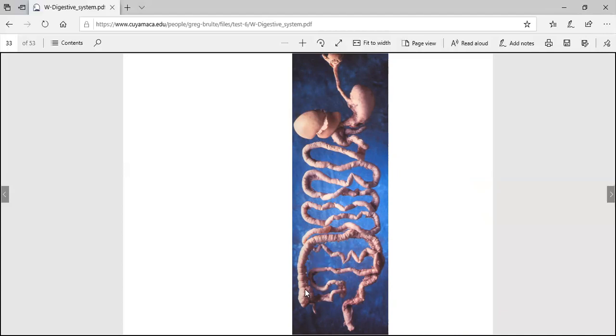Nice cecum, see how it's way bigger around than the rest of the colon. Then there's ascending colon, transverse, descending, sigmoid, rectum anus and out. There's the little appendix. I have used this laminate before to point out the bigger structures.